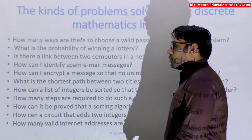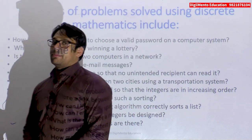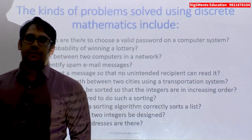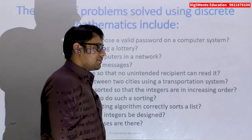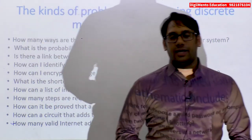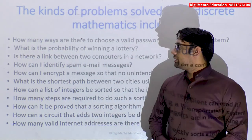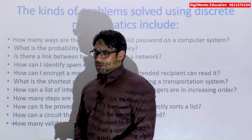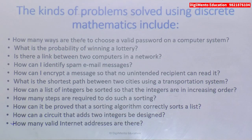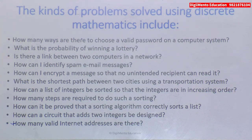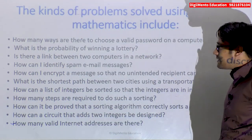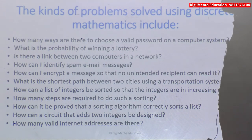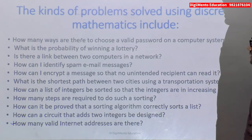One of the most important parts of discrete mathematics is permutations and combinations, as well as probabilities. For example, as you can see on the screen, one problem is: how many ways are there to choose a valid password on a computer system? This requires the basics of permutations and combinations. Next, what is the probability of winning a lottery? That is about probability.